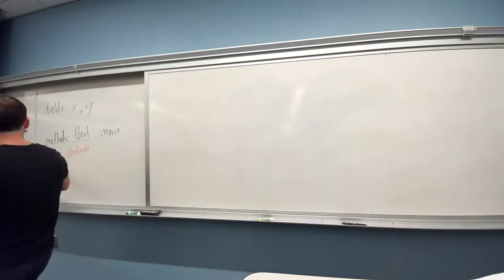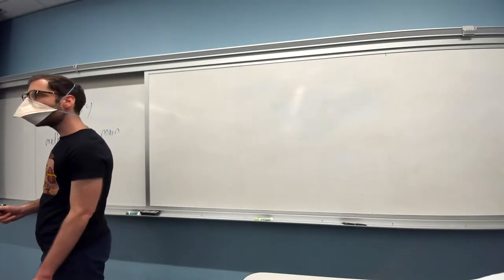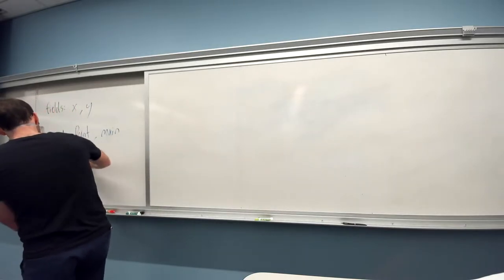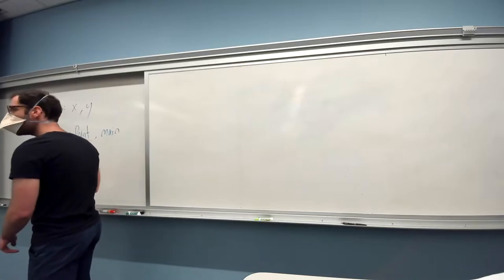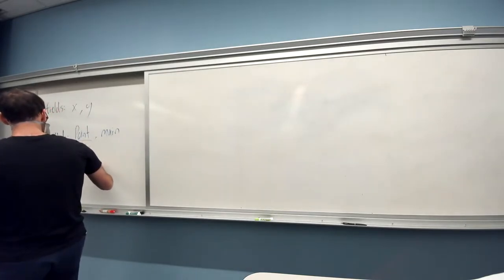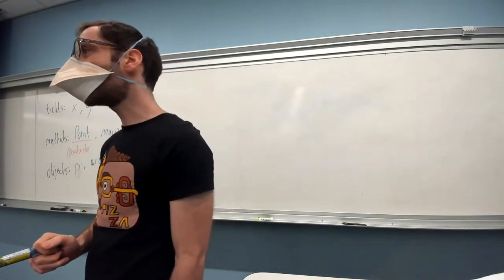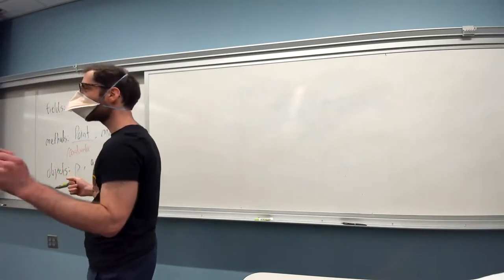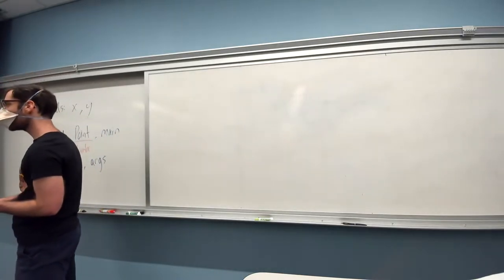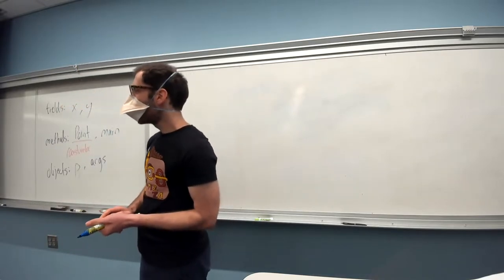So now the tricky bit, one of the objects is P, that point we're constructing in main. The other object is args, that array of strings that's the parameter to main. That is an object. And so it was a second object hiding in this code. What are your questions on that? Does this make sense? What makes args an object?